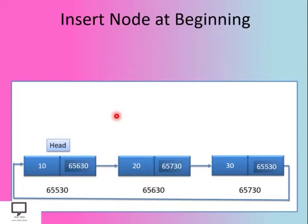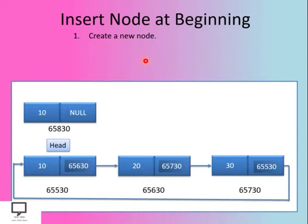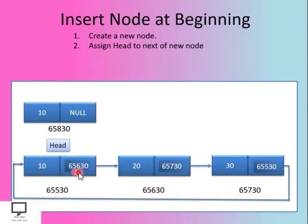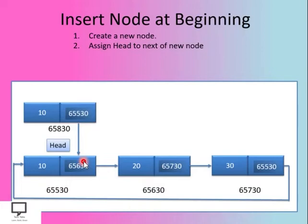To insert a node at the beginning: given this linked list with a head node, we first create a new node at a different address. The next step is to assign the current head to the next field of the new node, forming a logical link between the new node and the current head. After doing this, you can see the logical link is formed between these two nodes.